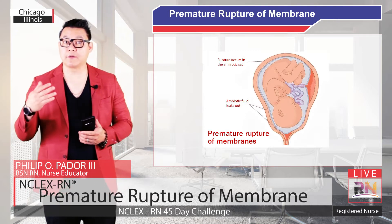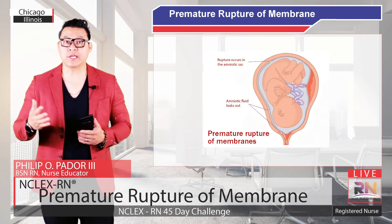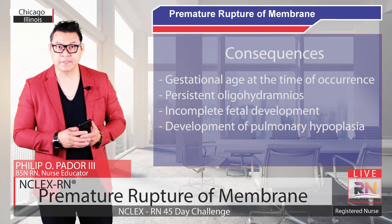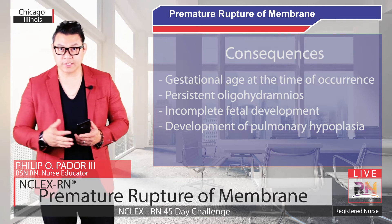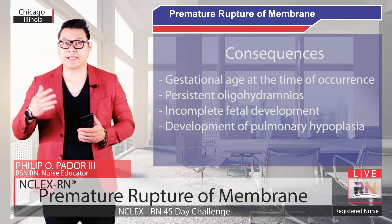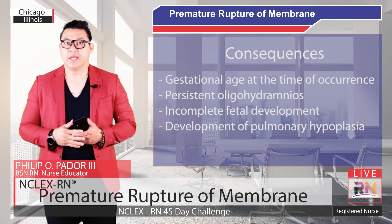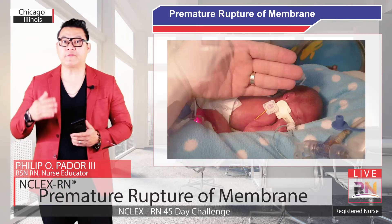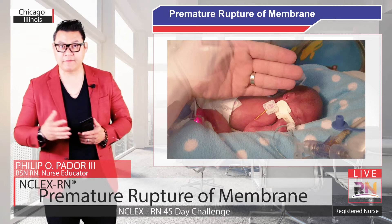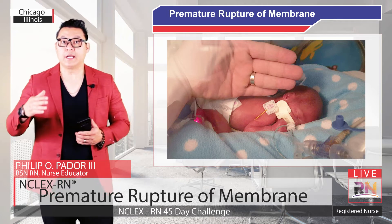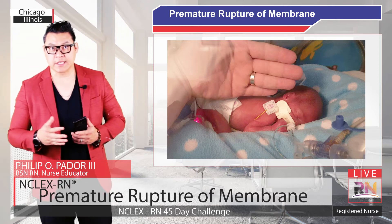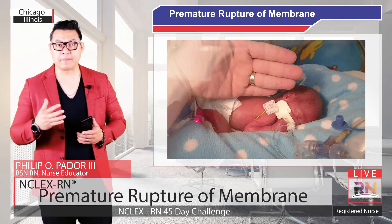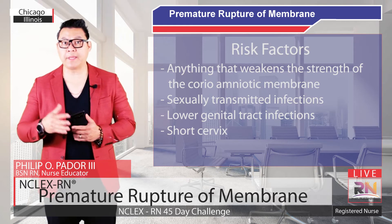PPROM is a leading cause of neonatal morbidity and mortality and is associated with 30% of preterm deliveries. The consequences of PPROM depend on the gestational age, the time of occurrence, persistent oligohydramnios at less than 22 weeks estimated gestational age, incomplete fetal development, and development of pulmonary hypoplasia. Infants born with pulmonary hypoplasia cannot be adequately ventilated. When PPROM occurs between 24 and 26 weeks, there is likely to be survival; however, there will be possible substantial morbidities from extreme prematurity.